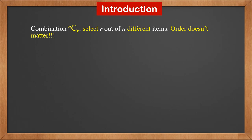Combination nCr is the number of ways to select r out of n different items. These n items need to be different, and order doesn't matter.